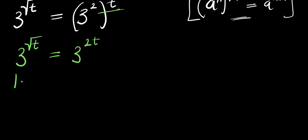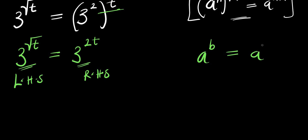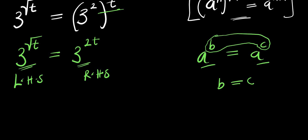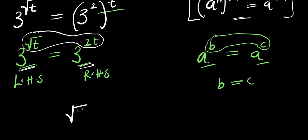Right now, the two bases on the left hand side and the right hand side are the same. When the two bases are the same, based on this identity — if you have a to the power of b equals a to the power of c, when the two bases are equal, you equate the exponents, so b equals c. That is exactly what we are going to do here. We equate the exponents: square root of t equals 2 times t.